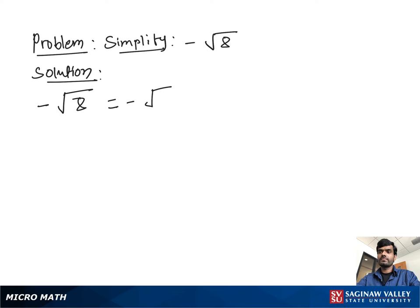We can write square root of 4 times square root of 2, because 4 times 2 is 8. Then we get our answer: the square root of 4 is 2, multiplied by square root of 2. So the final answer is negative 2 square root 2.